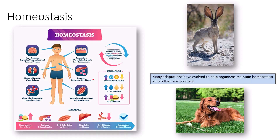Homeostasis is the ability to maintain a constant internal condition. All organisms — whether small mammals or humans — need the ability to maintain homeostasis. There are always fluctuations in an organism's environment, and if there are temperature fluctuations, the organism needs a way to regulate its internal temperature. Otherwise, the organism is in jeopardy of overheating or becoming too cold, which can have dire consequences for the viability of the organism.